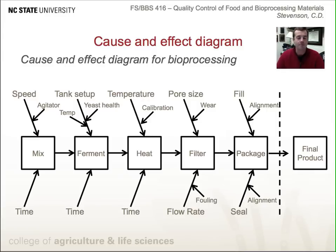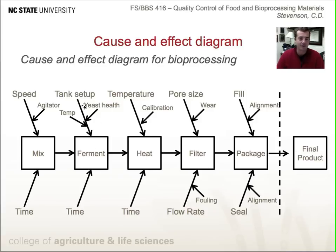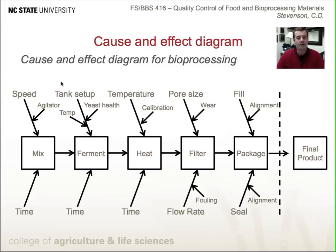Here's a general example in the bioprocessing industry — a process for brewing beer. The first step is mixing ingredients, where major causes could be mixing time or speed, and a minor cause could be agitation. The next step is fermentation, where time and tank setup might be major causes. Minor causes could include fermentation temperature or yeast health. You could evaluate and debate whether yeast health is a major or minor cause leading to an effect.